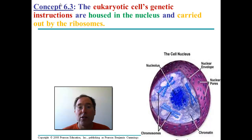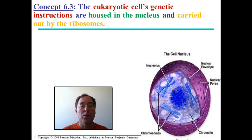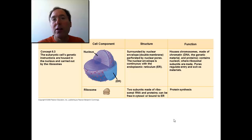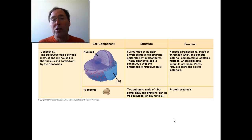The genetic instructions are housed in the nucleus and carried out by the ribosomes, and you can see that here. I see this structure called the nucleolus here in the middle. Here's the nuclear envelope with some pores. Here's something called chromatin. Here's some chromosomes where some genetic information is stored. This figure talks about the structure and the function of both the nucleus and the ribosome — there's no function without structure and vice versa.